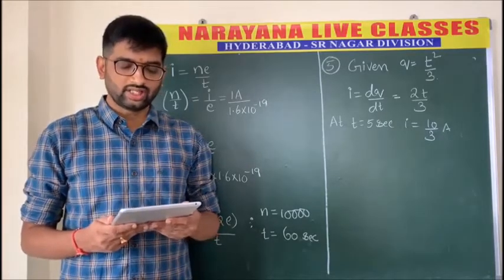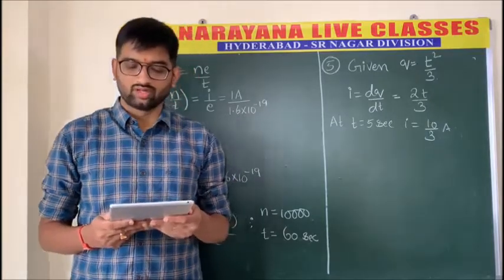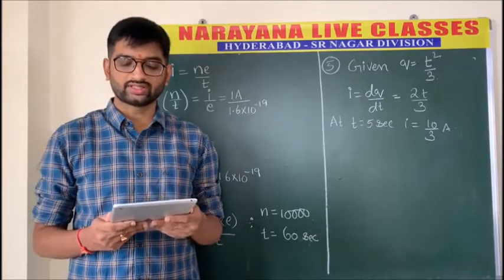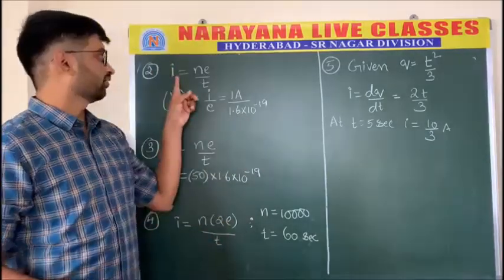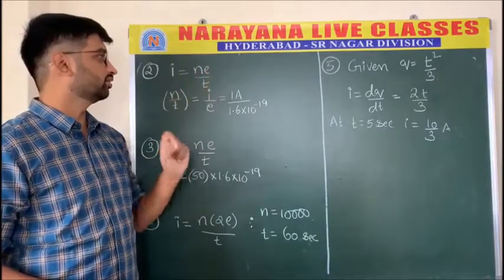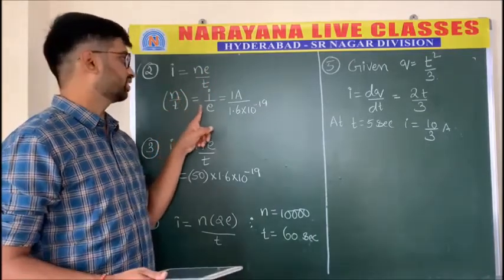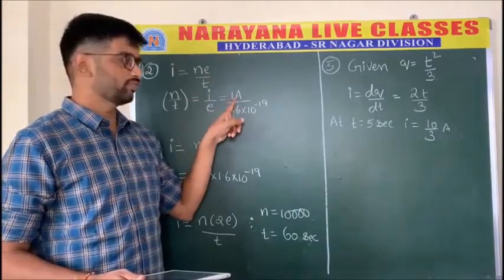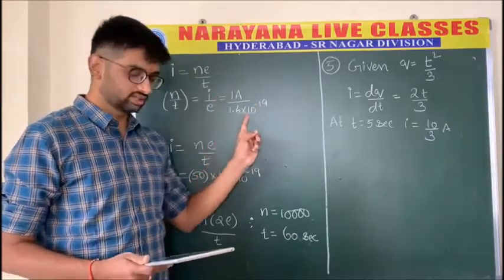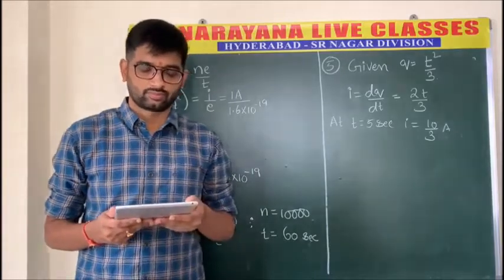Question number two: assuming that electron charge is 1.6×10⁻¹⁹ coulombs, find the number of electrons passing through a section of wire per second when the wire carries a current of one ampere. Here we know if n is the number of electrons, then I = ne/t. So n/t = I/e, where I is one ampere and e is 1.6×10⁻¹⁹, giving the required answer.